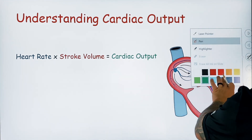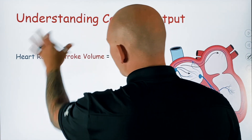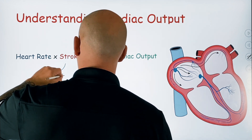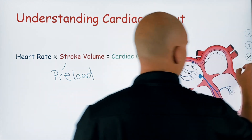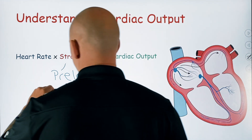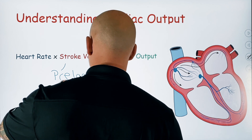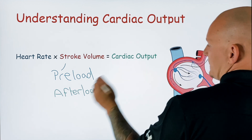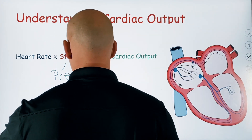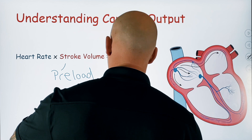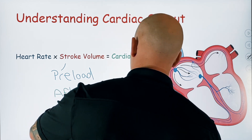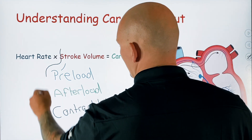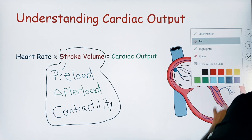The stroke volume is a little bit more complicated than that. Stroke volume is going to be comprised of three particular things: preload, afterload, and also contractility. Those are the three big things that are going to combine to make your stroke volume.